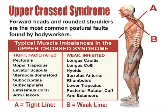The weak, inhibited muscles will be the longus capitis and coli, which are anterior neck muscles, the hyoids, also anterior neck muscles, the serratus anterior which are protractors of the shoulder blades, rhomboids which are antagonist to the serratus anterior, lower and middle trapezius, and the posterior rotator cuff muscles. That also includes the supraspinatus, which is really not posterior, but it's also inhibited.